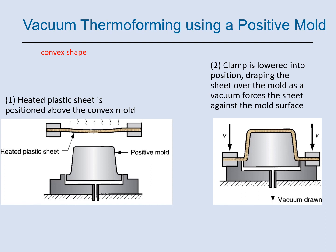Vacuum thermoforming can also be done with a positive mold. The film is positioned above the mold and heated with an electric heater, then the clamp is lowered and positioned on top of the mold. The sheet covers the mold, air is vacuumed out, the polymer melt takes the mold shape, and after cooling the part is ejected.